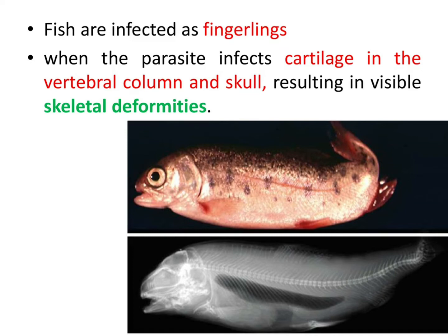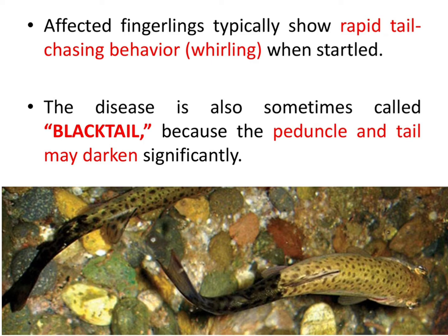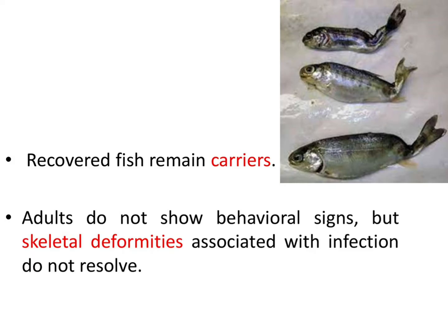Fish are infected as fingerlings when the parasite infects cartilage in the vertebral column and skull. Skeletal deformities develop and X-ray images are seen here. Affected fingerlings typically show rapid tail-chasing behavior, or whirling, when startled. The disease is also sometimes called black tail because the peduncle and tail may darken significantly. Recovered fish remain carriers; adults do not show behavioral signs, but skeletal deformities do not resolve, as seen in these fishes.